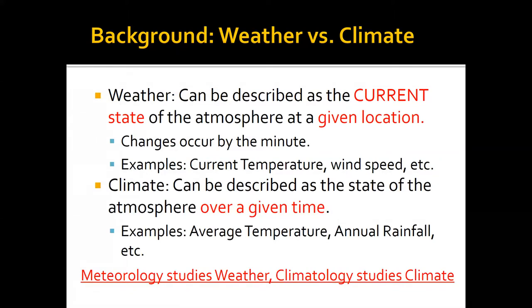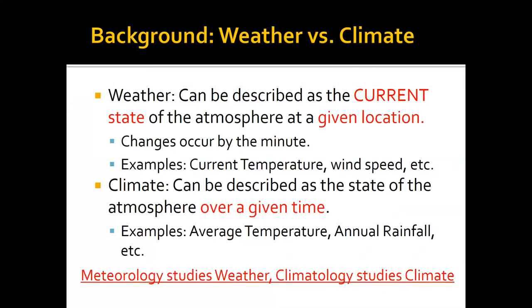Something else that defines a location's climate is what kind of extreme weather events occur there. Here on the west coast of the United States, drought and fire weather are much more common than in New Orleans, Louisiana, where hurricanes are more common, or Chicago, Illinois, where blizzards are more common, or New York City, where blizzards and nor'easters are more common.